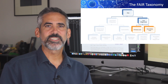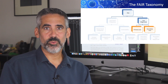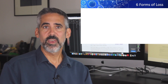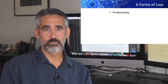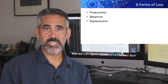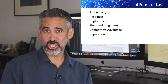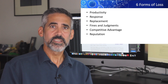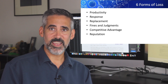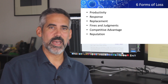So how do we determine what losses go where, and how do we make sure we account for all losses? FAIR provides us with six forms of loss: productivity, response, replacement, fines and judgments, competitive advantage, and reputation. Some are typical of only primary losses, others of secondary, and a couple could be either or both — but that's a more advanced topic.